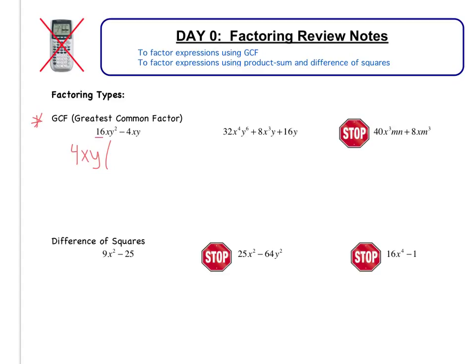Now I need to see what's left. 16 divided by 4 will leave me with 4x. I took out an x, so there's no more x's. y squared, I took out 1y, so I'm left with a y. Minus 4xy. Well, I factored out a 4xy, so I keep a 1 in its place. So this is your answer. You have to remember that 1 is a placeholder.